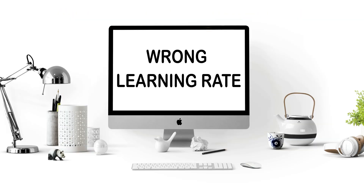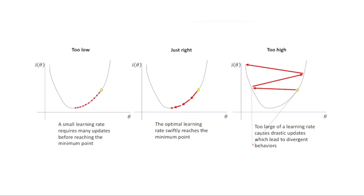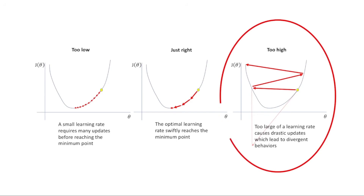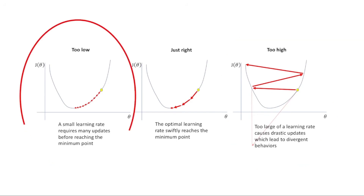Wrong learning rate. Learning rate is a crucial hyperparameter that controls how much your model adjusts its weights during training. Too high and your model overshoots optimal values, possibly diverging. Too low and training crawls along, potentially getting stuck in local minima.